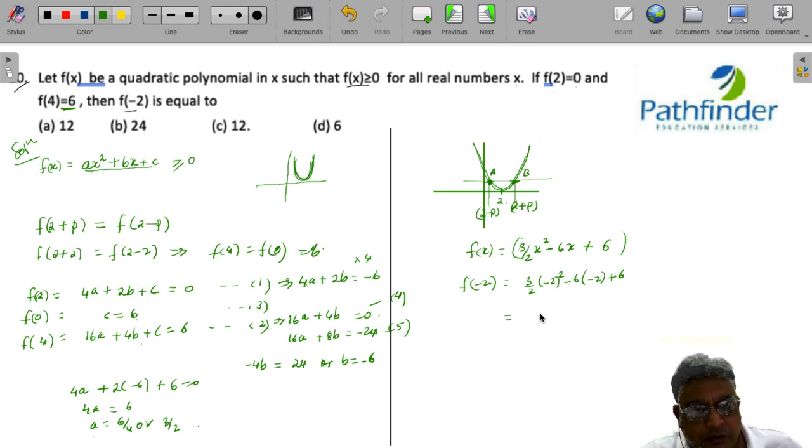So 2 to 0 are 4. So 6 plus 12 plus 6. So the value of f(-2) is equal to 24, which is your answer.